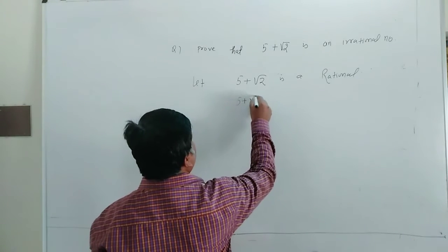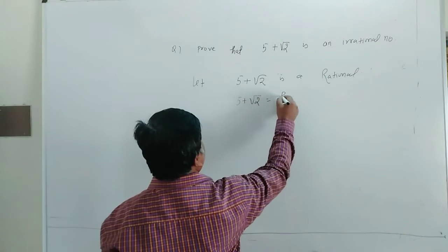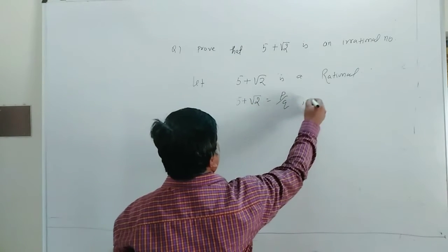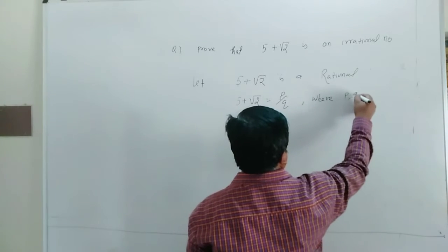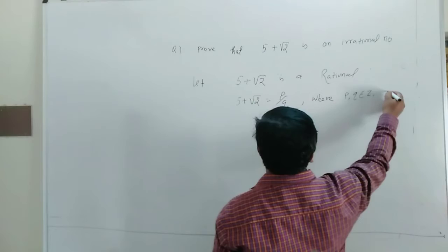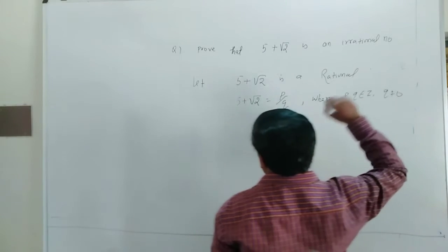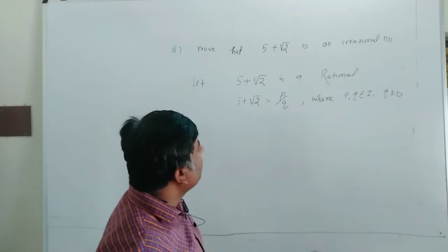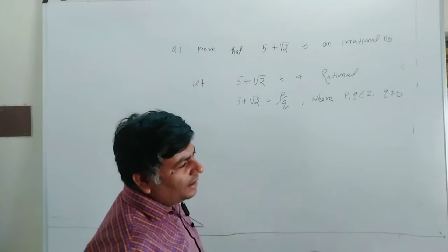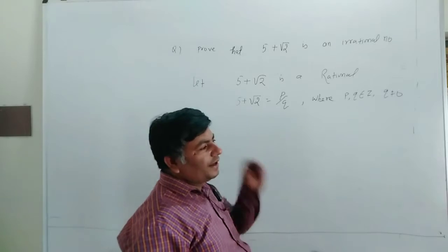Let 5 plus under root 2 equal P by Q, where P and Q belongs to Z, Q not equals 0. Now, the common factor between P and Q other than one higher, this is part of the problem.